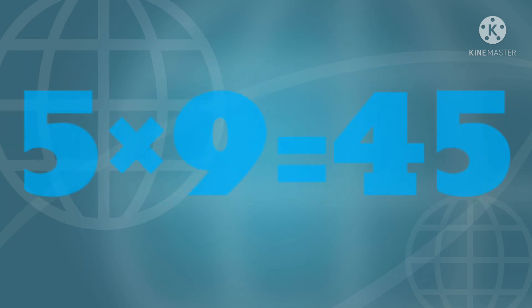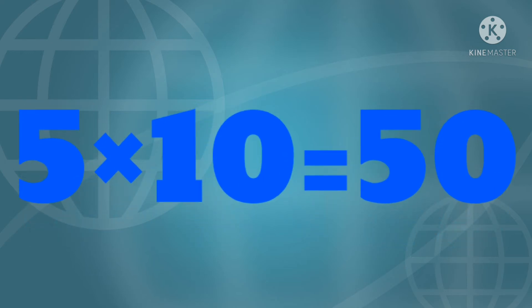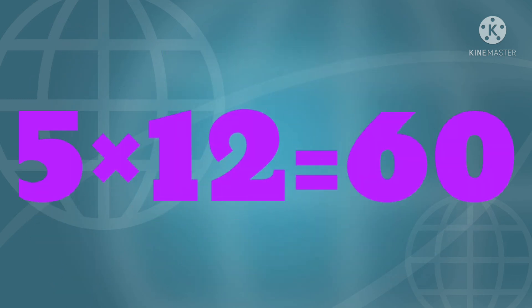Five times nine is forty-five. And five times ten is fifty. Five times eleven is fifty-five. And five times twelve is sixty.